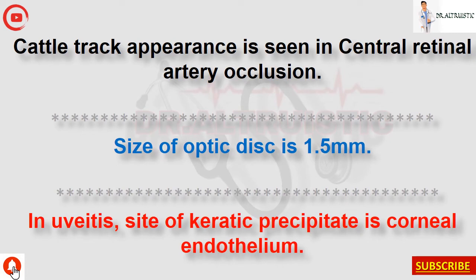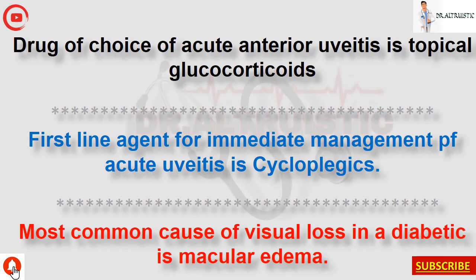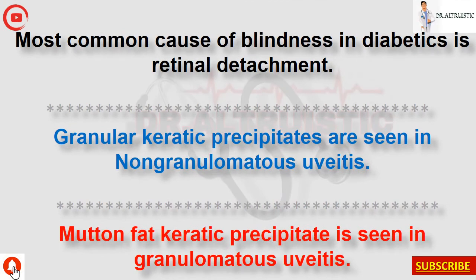Cattle track appearance is seen in central retinal artery occlusion. Size of the optic disc is 1.5 mm. In uveitis, site of keratic precipitates is the corneal endothelium. Drug of choice for acute anterior uveitis is topical glucocorticoids. First-line agent for immediate management of acute uveitis is cycloplegics. Most common cause of visual loss in a diabetic is macular edema. Most common cause of blindness in diabetics is retinal detachment. Granular keratic precipitates are seen in non-granulomatous uveitis. Mutton fat keratic precipitates are seen in granulomatous uveitis.